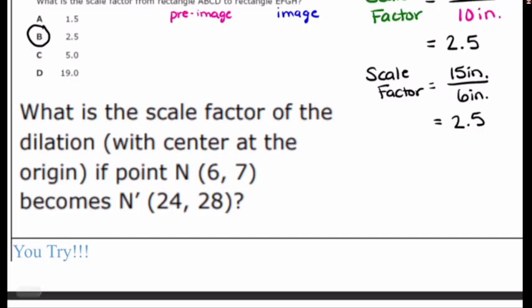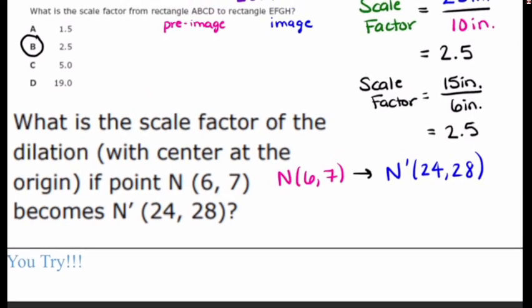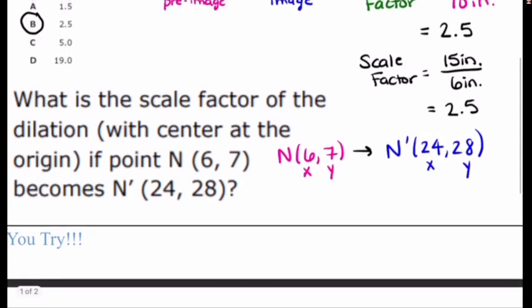Over here we have, the important part is the center is at the origin. We're trying to find the scale factor if the point N is (6,7). So our pre-image coordinate is (6,7), and (6,7) becomes our image at (24,28). So like I said, to find the scale factor, divide the x value of your pre-image with the x value of your image, the y value of your pre-image with the y value of your image.